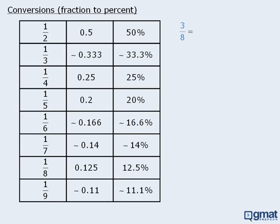For example, to convert three-eighths into a percent, we use the fact that one-eighth is equal to 12.5%. This means that three-eighths should be three times as large as 12.5%, so three-eighths must equal 37.5%. Similarly, to convert two-ninths into a percent, if one-ninth is approximately equal to 11.1%, then two-ninths is approximately equal to 22.2%.